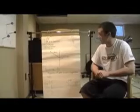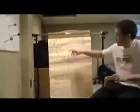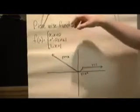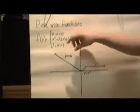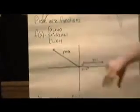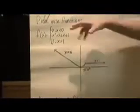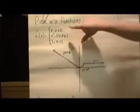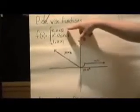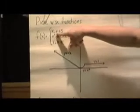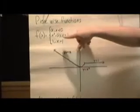Discussing piecewise functions and absolute value functions. A piecewise function is a function that has different parts to it, and each part applies to a different interval of the x values. In this graph, the first part of this piecewise function is negative x, when x is less than 0. You see that here, with the negative x graph from negative infinity to 0.